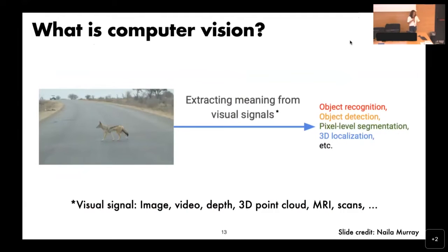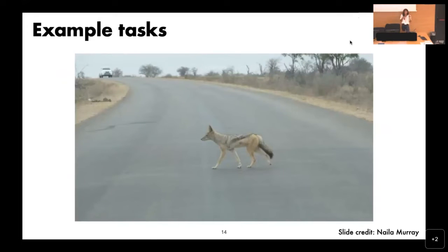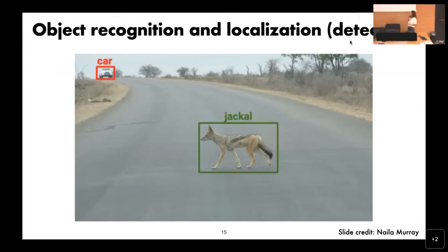Given an image, some example tasks include: recognizing objects by naming them from a predefined set of categories; localizing them by putting a bounding box around them, also called detection; answering questions given an image — for instance, 'Is this an outdoor scene?' When visual question answering started, I was quite skeptical whether it would ever work, and I'm really happy to see it's getting better after seven years. Activity recognition is like object recognition but your set of classes are actions — in this case, 'walking.'